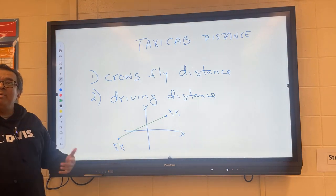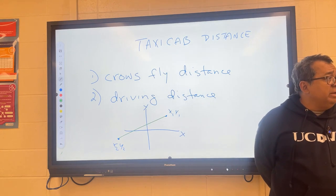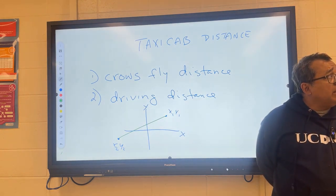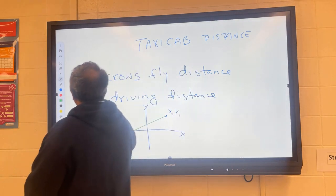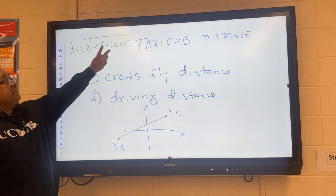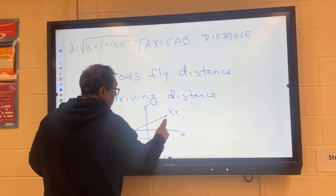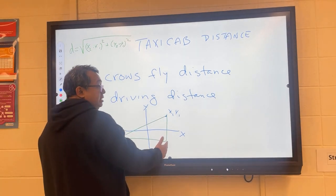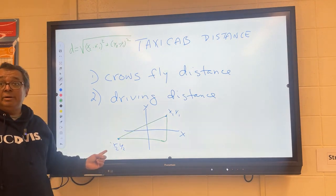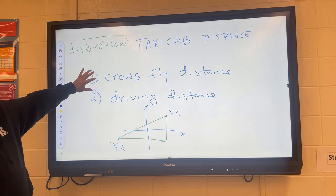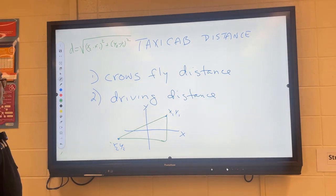Turn to your partner and describe the mathematical formula we use to calculate crow's fly distance, then write it down. The distance formula: d equals the square root of (x2 minus x1) squared plus (y2 minus y1) squared — you can also flip the x's and y's, it won't matter. What we're doing is turning this into a Pythagorean problem: a² + b² = c². That is the formula for crow's fly distance, which is also Euclidean geometry.